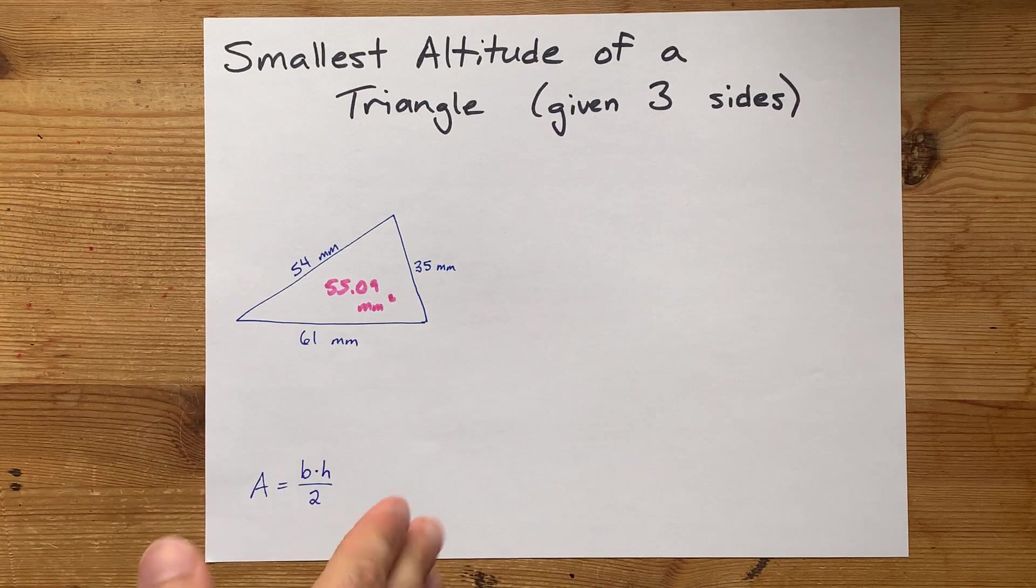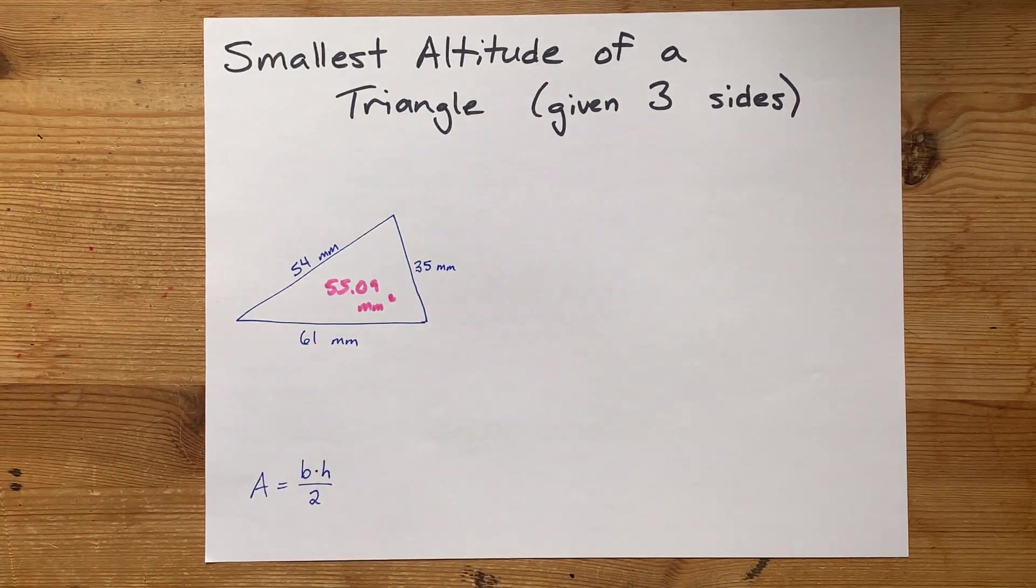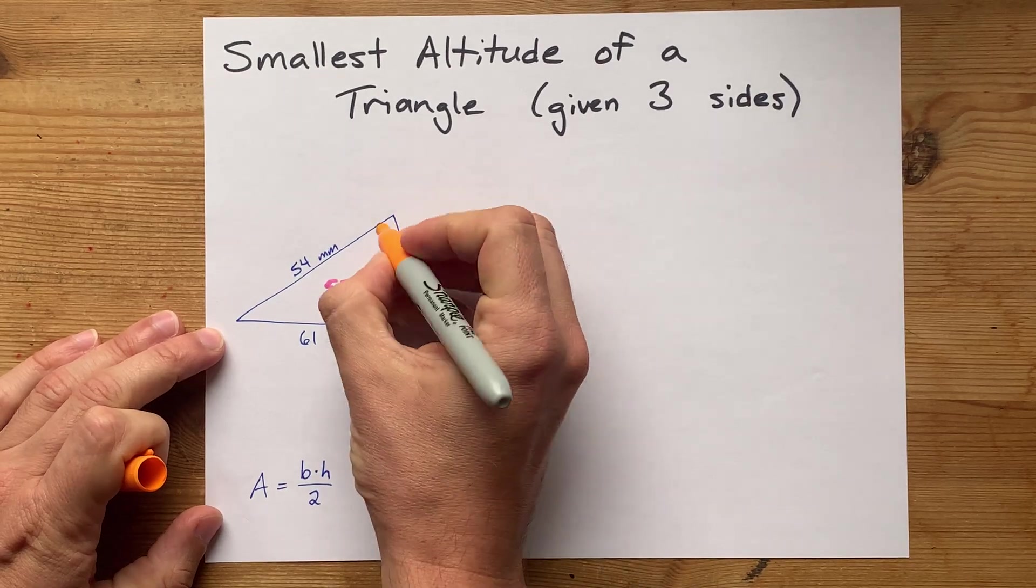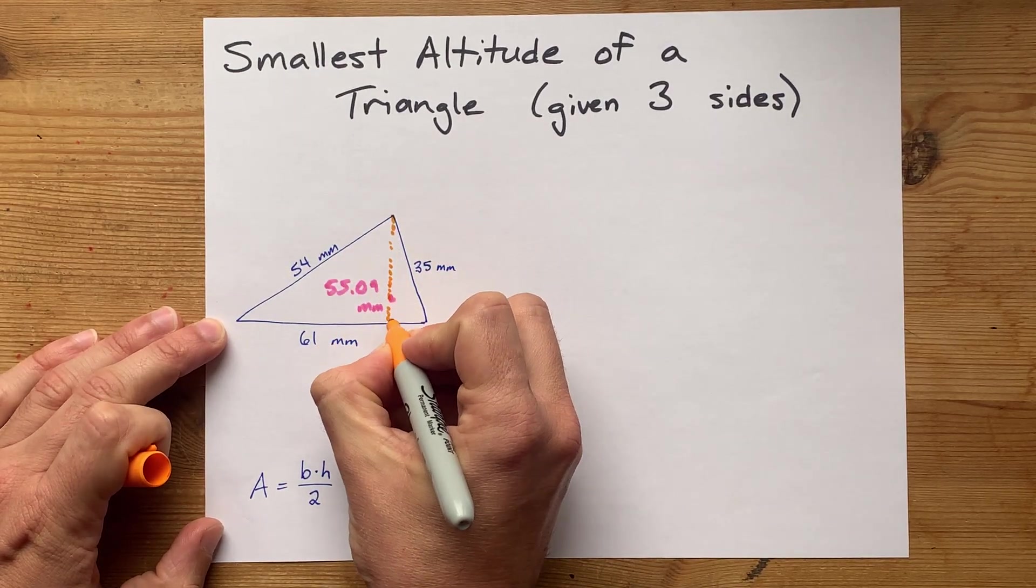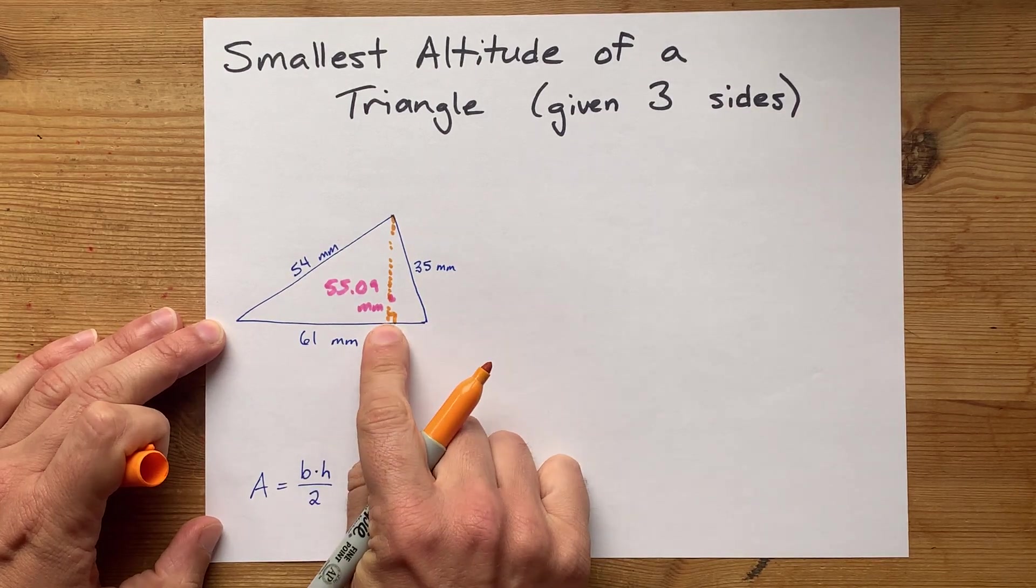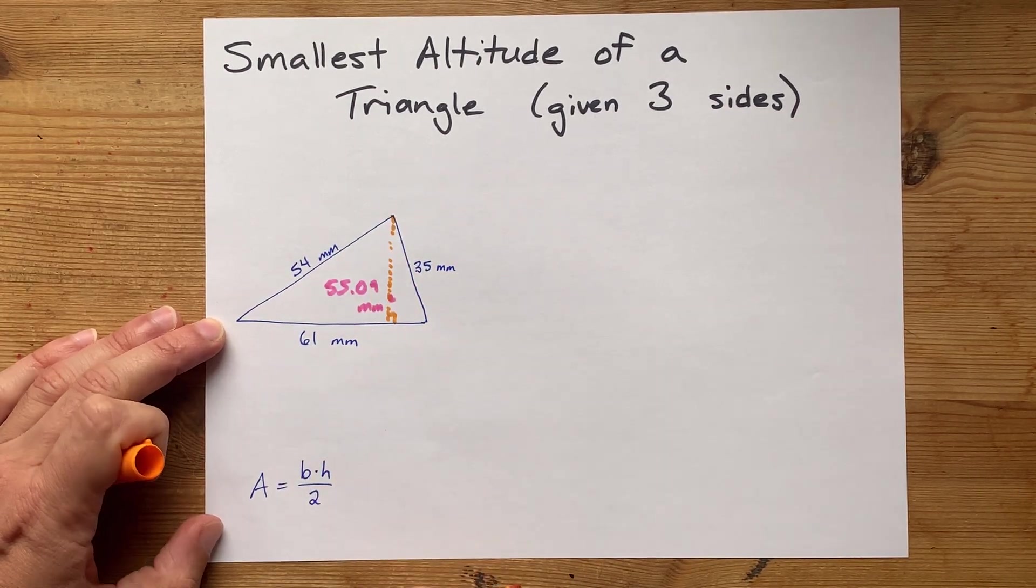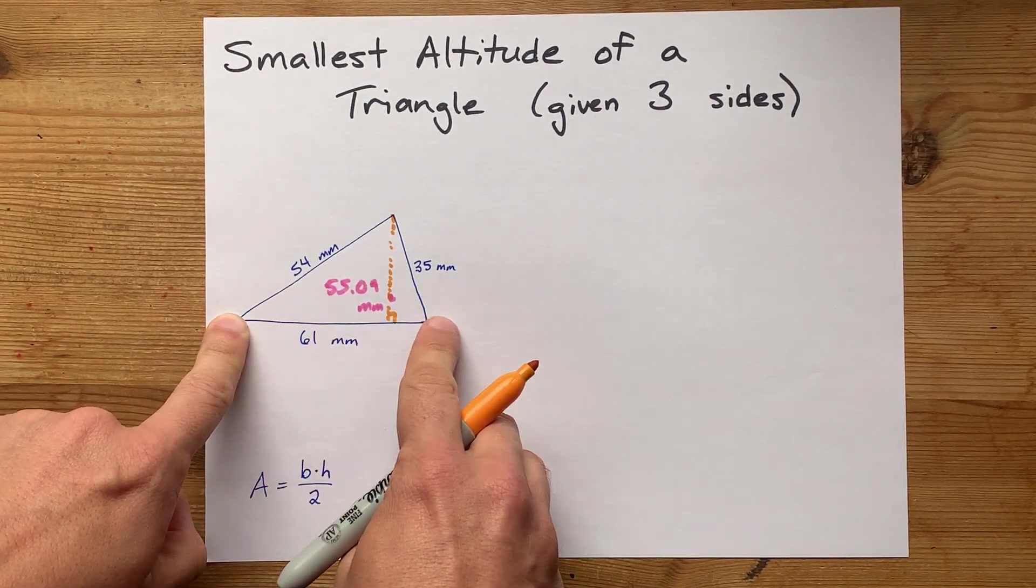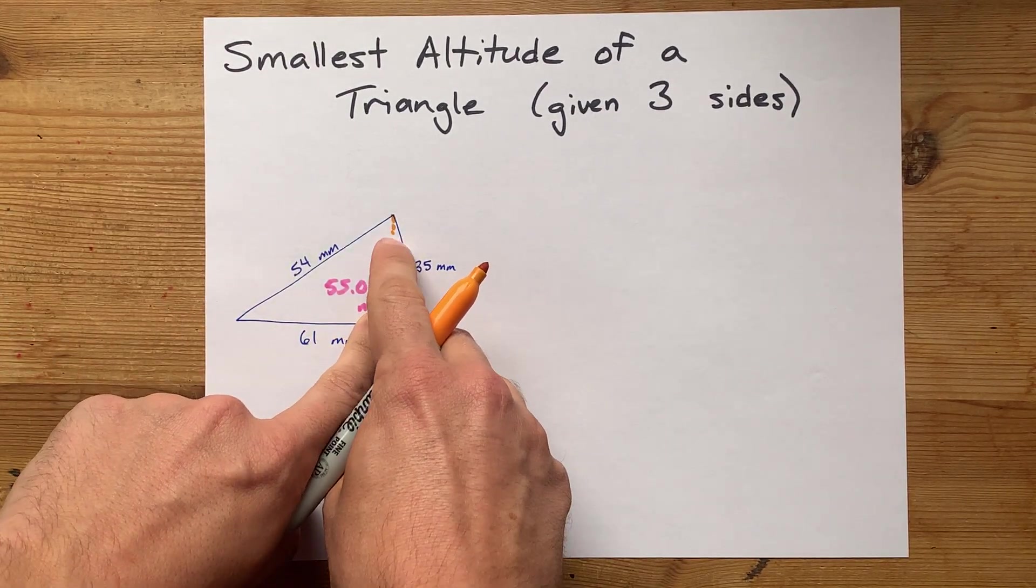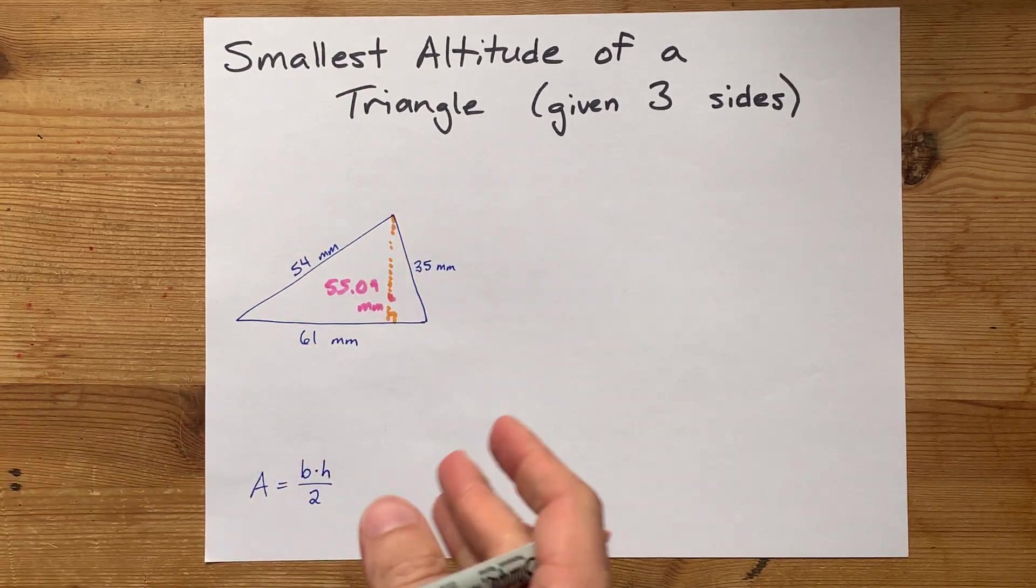Now altitudes are the heights of the triangle, and what I mean by that is if you start at one corner, you have to draw a line that meets the opposite side at 90 degrees. The area of a triangle is the base of the triangle times whatever height that is divided by 2.